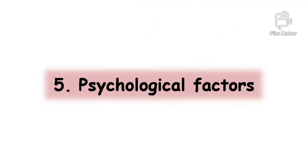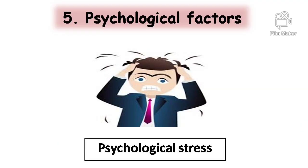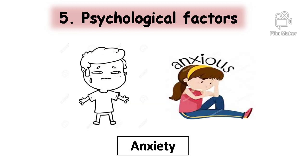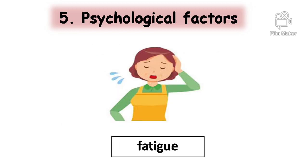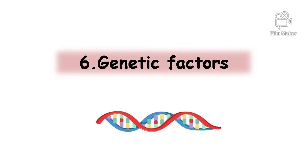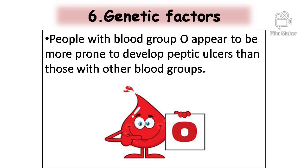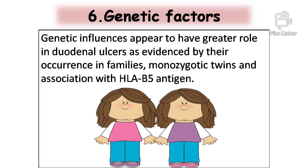Psychological factors such as psychological stress, anxiety, and fatigue are also contributing causes. Genetic factors: people with blood group O appear to be more prone to develop peptic ulcers than those with other blood groups. Genetic influences appear to have a greater role in duodenal ulcers, as evidenced by their occurrence in families.